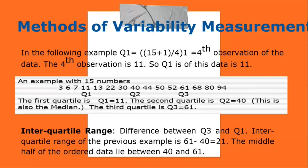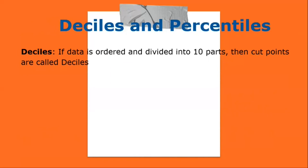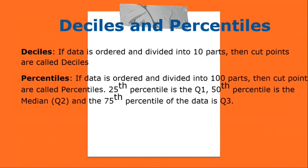Deciles and percentiles: if data is ordered and divided into 10 parts, the cut points are called deciles. If divided into 100 parts, the cut points are called percentiles. The 25th percentile is Q1, the 50th percentile is the median (Q2), and the 75th percentile is Q3. In notation, the pth percentile is the [(n+1)/100 × p]th observation of the data, where p is the desired percentile and n is the number of observations.